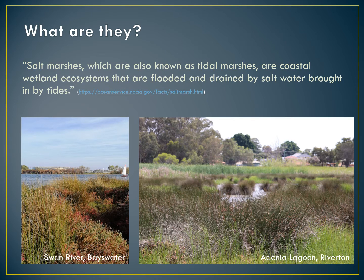Salt marshes, which are also called tidal marshes, are an area along rivers, coasts and estuaries which floods and drains by the tidal movement of the adjacent water body. They are characterized by their plant species which tend to be dense in appearance and play a significant role in the trapping and binding of sediment.